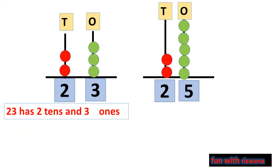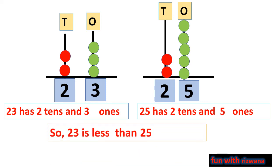So, 23 has 2 tens and 3 ones. On the other hand, 25 has 2 tens and 5 ones. So, 23 is less than 25 and we have to write it as 23 is less than 25.